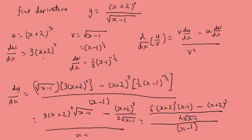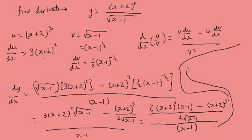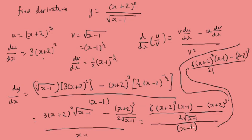Tidying this up: we multiply through to get 6 times x plus 2 squared times x minus 1, minus x plus 2 cubed, all over 2 times x minus 1 to the three over two. We can then factor out x plus 2 squared from the numerator, leaving 6 times x minus 1 minus x plus 2 inside the bracket.